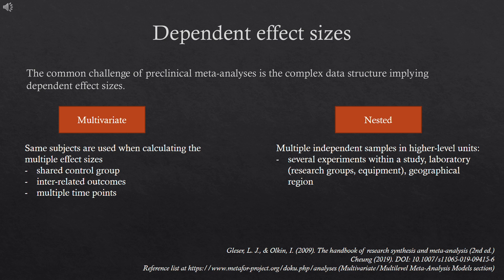Non-independent effect sizes can be broadly categorized as multivariate and nested. When the same subjects are used to calculate multiple effect sizes, the data structure is multivariate. This is the case, for example, when there are multiple treatment groups and a common control group, or when multiple outcomes are measured in the same subjects, or when an outcome is measured at different times.